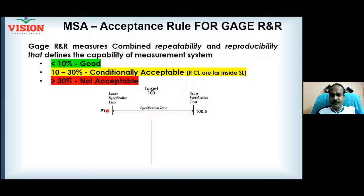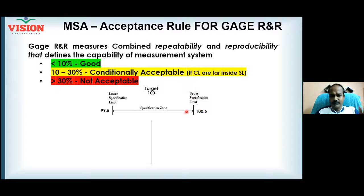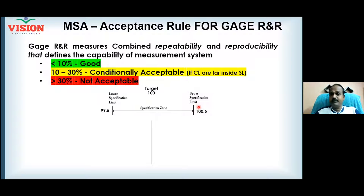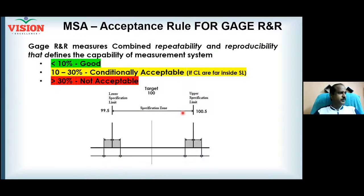But if you produce parts throughout the range — for example, parts closer to the specification limit — what will happen? Your measurement error will throw your reading outside of the spec. The actual part is inside the spec, but because of the error, you measure it as outside. As a result, your good product will get rejected. The reverse is also possible: a bad product might get accepted.